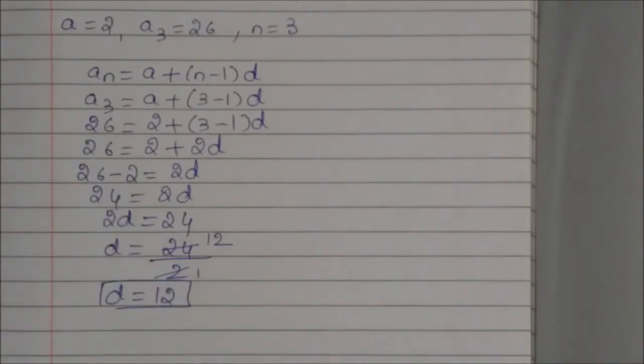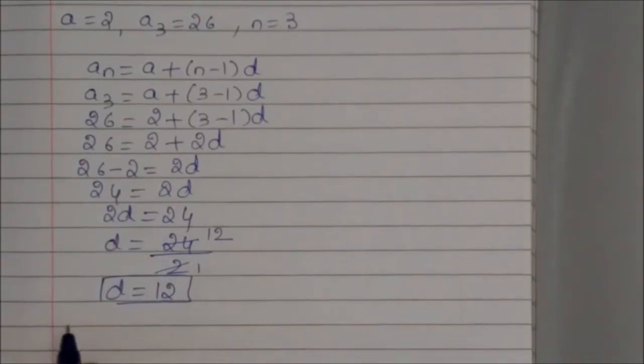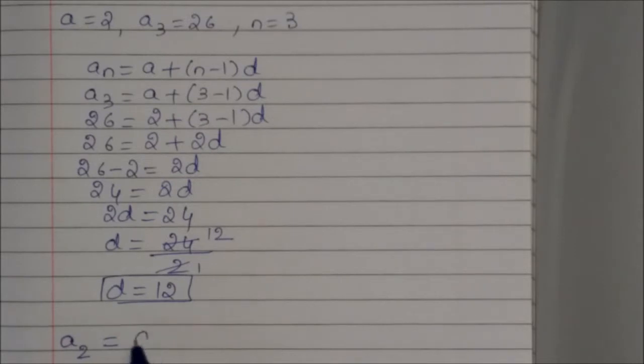The missing term here is a₂. So we will find a₂. a₂ equals a₁ plus d. This is the simplest formula.